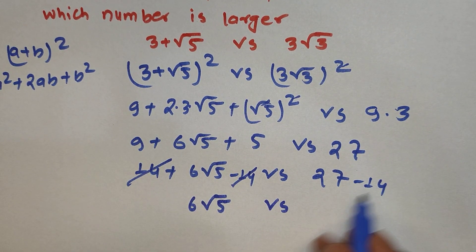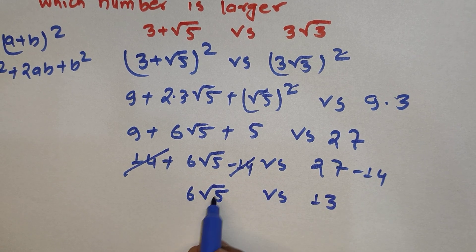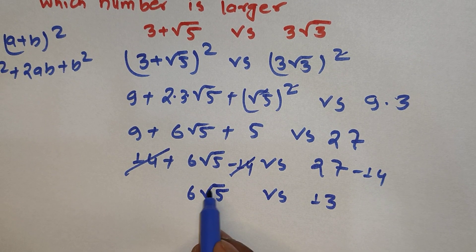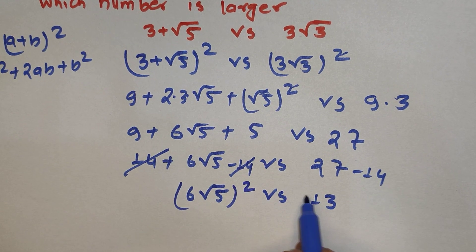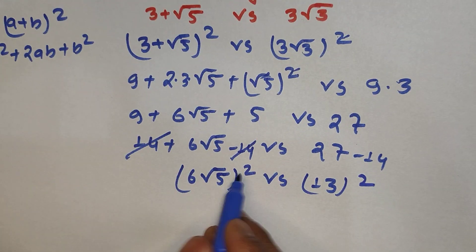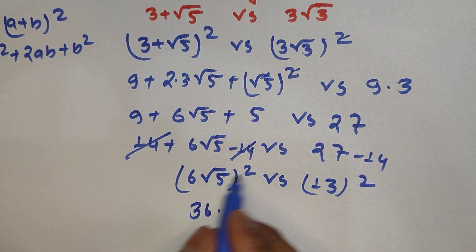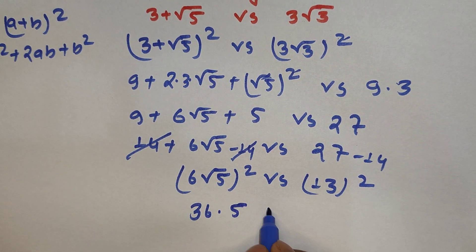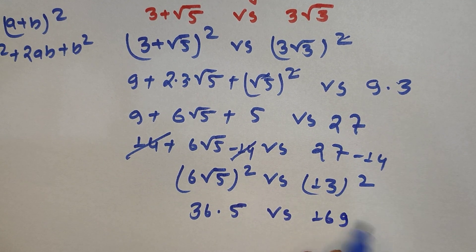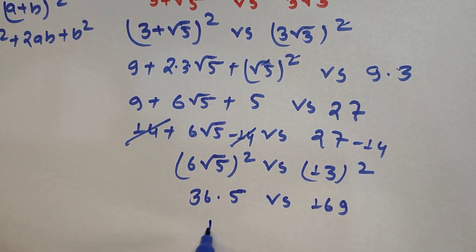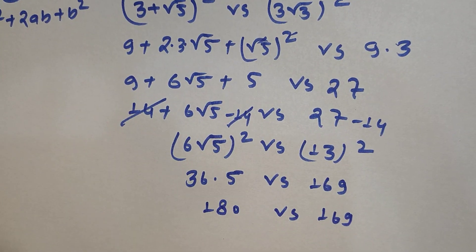Now we have 6√5 versus 13. We square both sides again to remove the remaining square root. 6² is 36, times 5 gives 180 on the left side, versus 13² which is 169 on the right side.